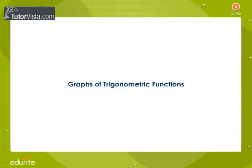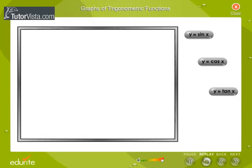Graphs of Trigonometric Functions. Mouse over the buttons y equals sin x, y equals cos x, y equals tan x to view the graphs. Click on any of the buttons to plot the graph of the function.